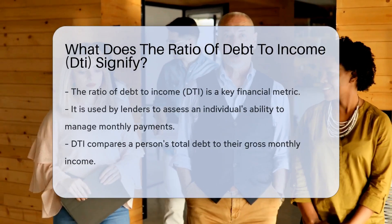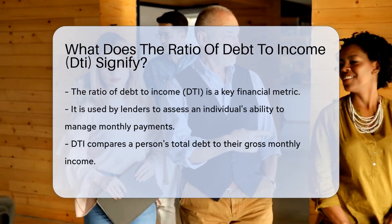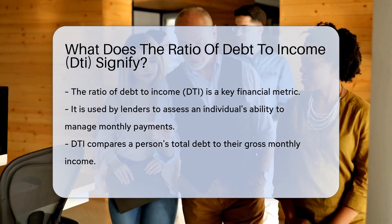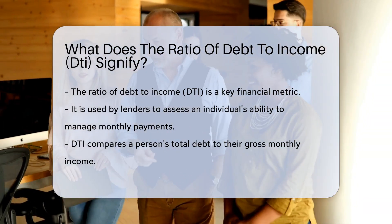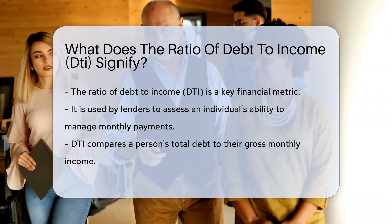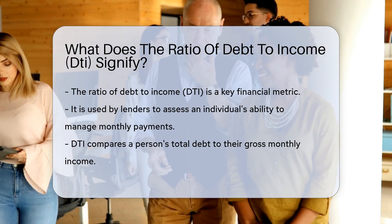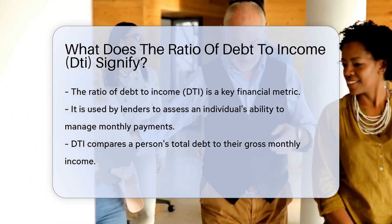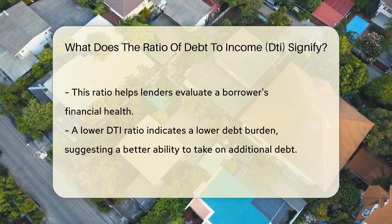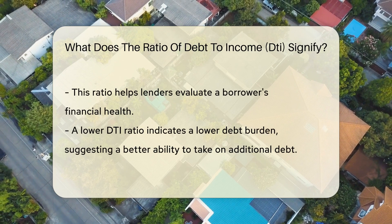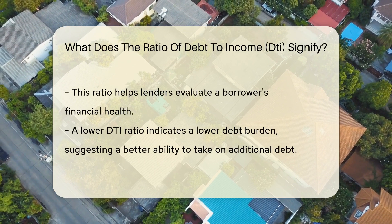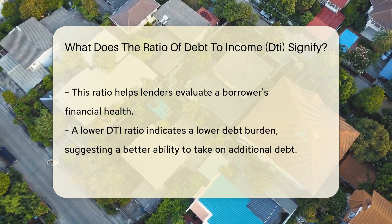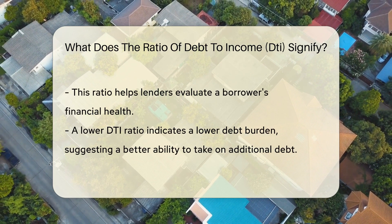The Ratio of Debt to Income, DTI, is a financial metric used by lenders to evaluate an individual's ability to manage monthly payments. It compares the amount of debt a person has to their gross monthly income. Lenders use this ratio to assess the borrower's financial health and determine their creditworthiness.